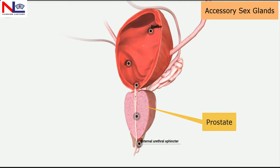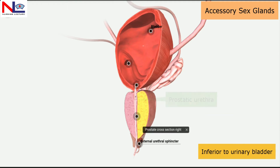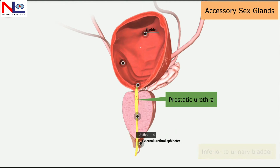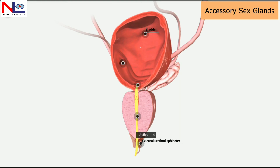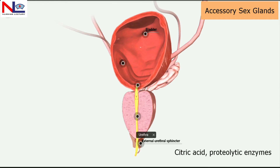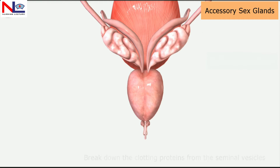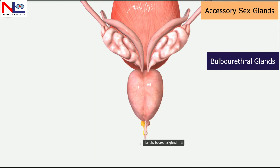The next gland is the prostate. In this cross section you can see the prostate lies inferior to the urinary bladder, surrounding the prostatic urethra as it crosses through the gland. The prostate contributes about 25% of the total volume of semen, entering the prostatic urethra through many prostatic ducts. Its secretion is light, milky, and slightly acidic, containing citric acid and proteolytic enzymes that break down the clotting proteins from the seminal vesicles.